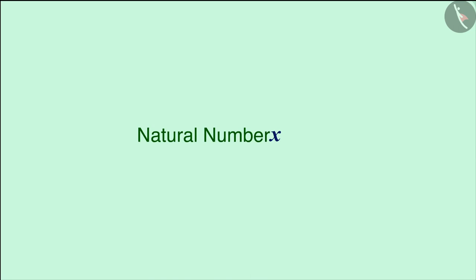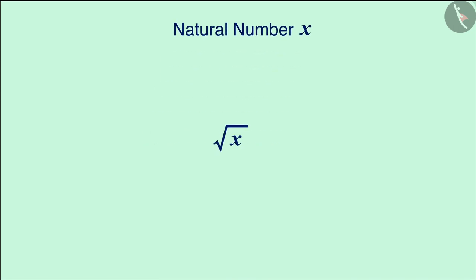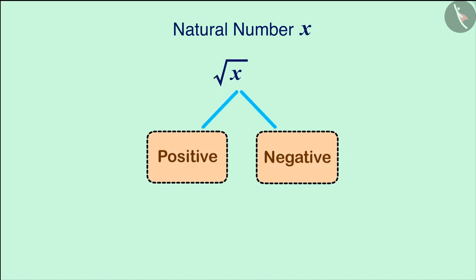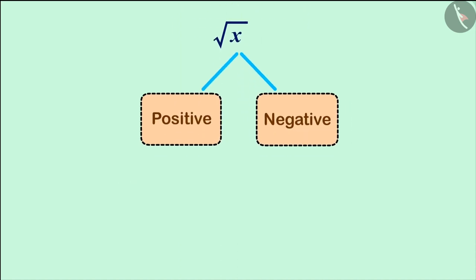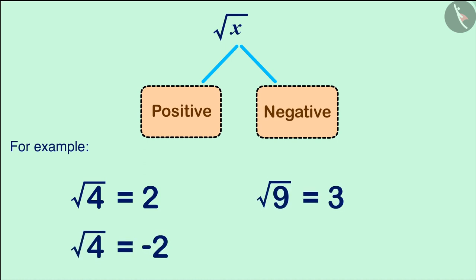We know that the square root of a natural number x is the number the square of which is x. A perfect square number has two square roots at the same time, negative and positive. For example, the square root of 4 is 2 and minus 2, and the square root of 9 is 3 and minus 3.